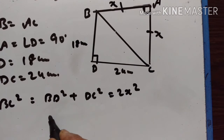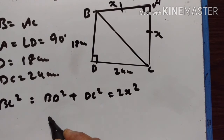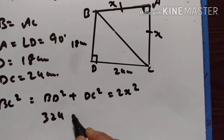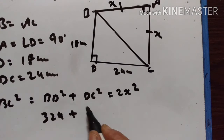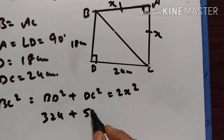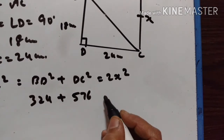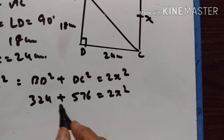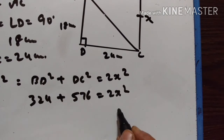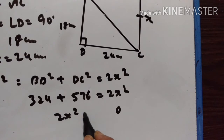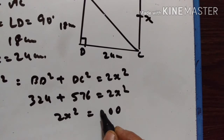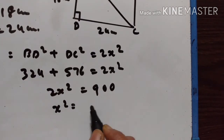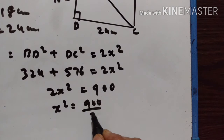BD squared is equal to 18 squared, which is 324. Hope you know the squares and square roots by heart. DC squared: 24 squared is equal to 576. So 324 plus 576 is equal to 2X squared. Therefore X squared is equal to 900 upon 2, that is 450.